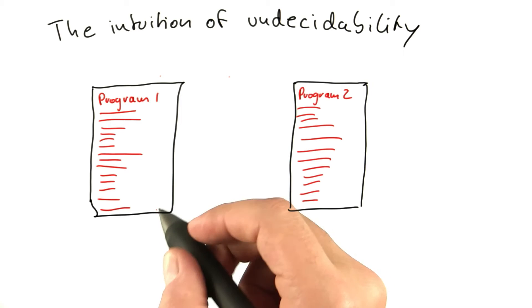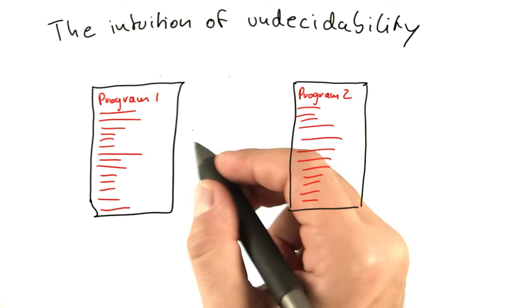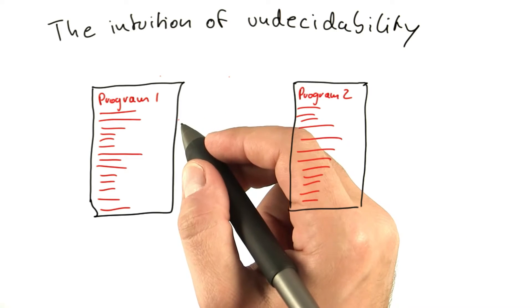So informally, all that the undecidability of the halting problem says is that you cannot analyze every aspect of computation using computation.